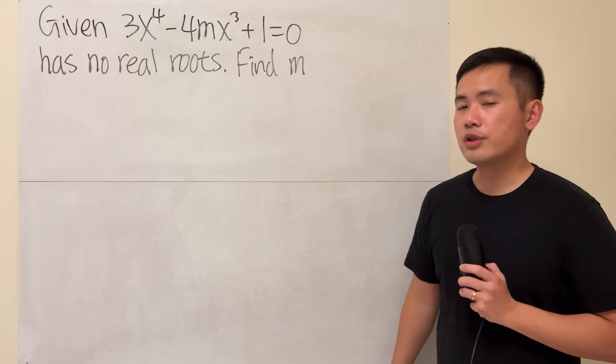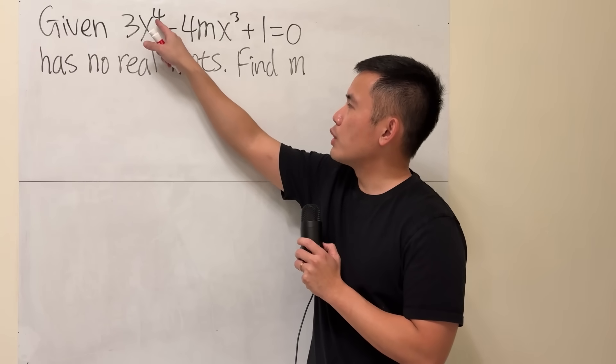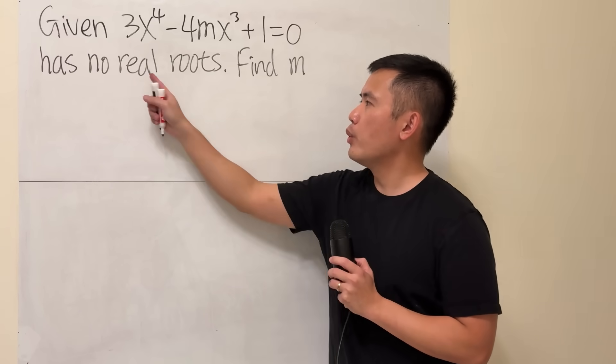At first you might be thinking this is just an algebra question because it says given that 3x to the fourth power minus 4mx to the third power plus 1 equals 0 has no real roots.